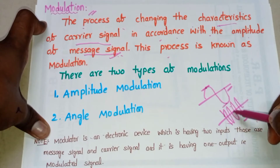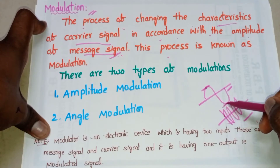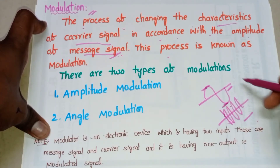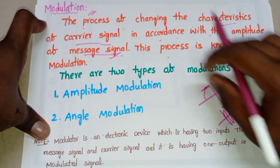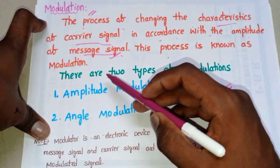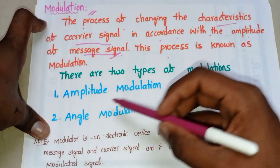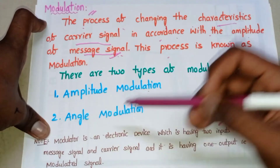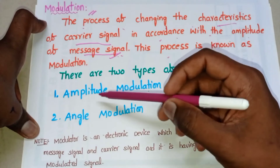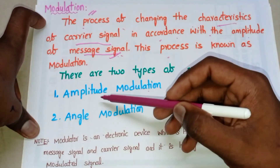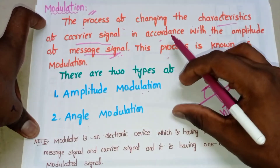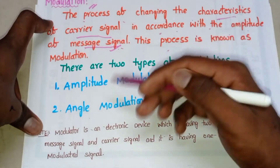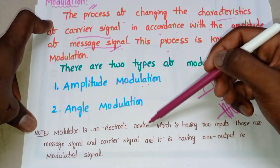When we are at the positive peak amplitude of the message signal, the characteristics of the carrier signal are high — they also increase. Whenever we are at the negative peak of the message signal, the characteristics are also low. This type of variation of the carrier signal according to the message signal is known as modulation. We have mainly two types of modulations: one is amplitude modulation and another one is angle modulation.